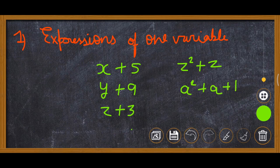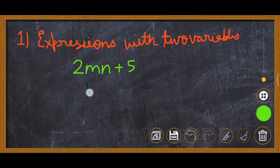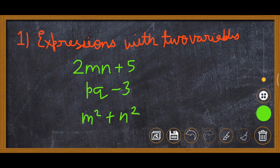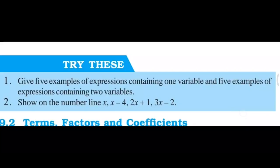Now these are the expressions with two variables. Expressions with two variables: 2mn plus 5 — variables m and n; pq minus 3 — variables p and q; m squared plus n squared — variables m and n; a plus b — variables a and b; a minus b — variables a and b. In all of these, two variables are there.